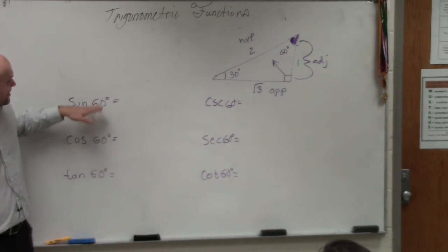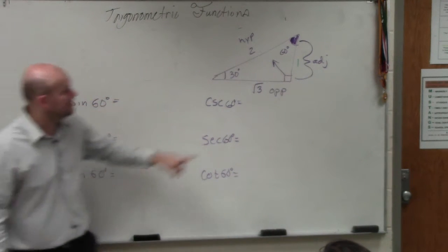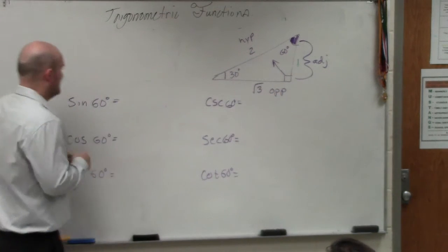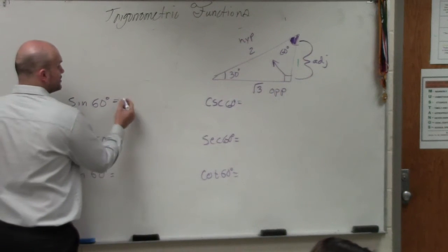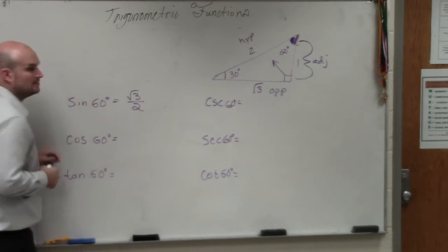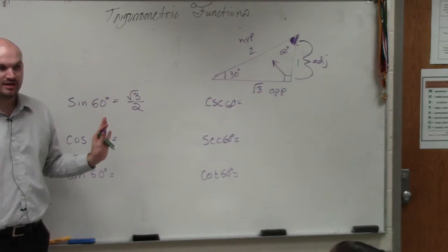So last class period, we talked about sine, opposite over hypotenuse. So the sine of 60 degrees is equivalent to the square root of 3 over 2. That's it. Done. That's all I need.